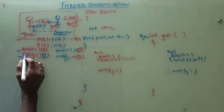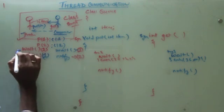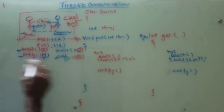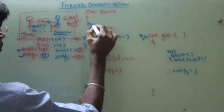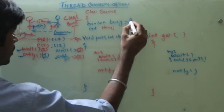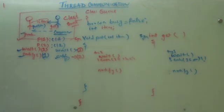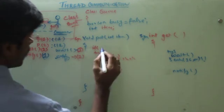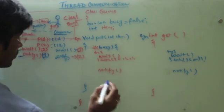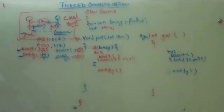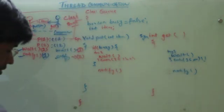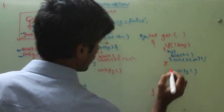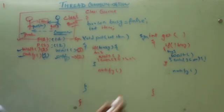Now producer has to notify first and then it has to go to wait state and consumer has to wait first then it has to go to notify state. Then to control this behavior we have to declare another boolean variable let's say busy.